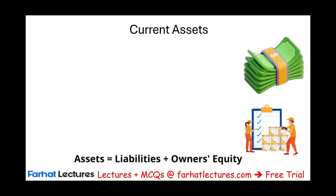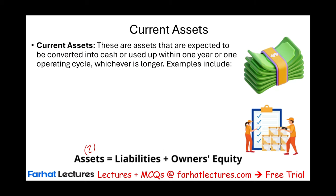Within assets, we differentiate two types. Current assets are assets that are expected to be converted into cash or used up within one year or the operating cycle, whichever is longer. Any asset that we are going to use, consume, or convert to cash is considered a current asset.